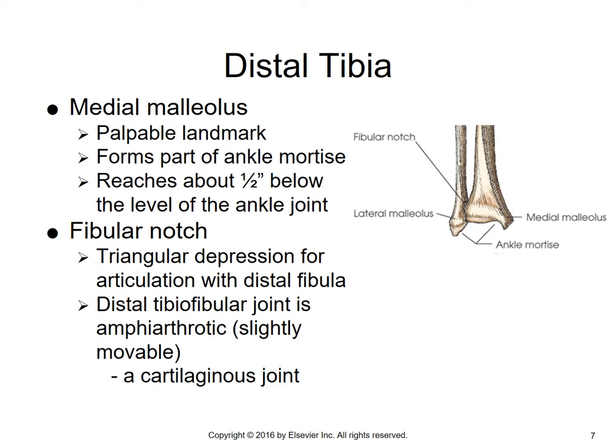For a quick review: we've got diarthrotic joints, which are freely movable; amphiarthrotic joints, which are somewhat movable; and synarthrodial joints that don't move at all, like the fibrous sutures of your skull.